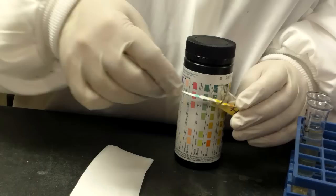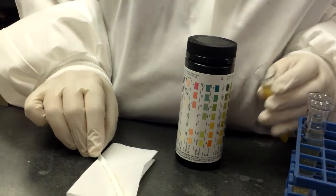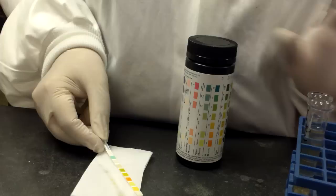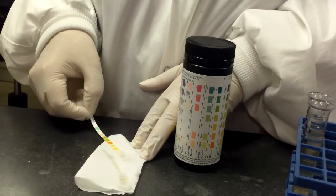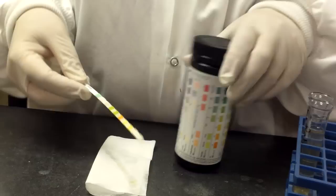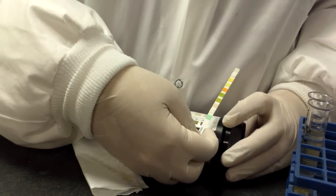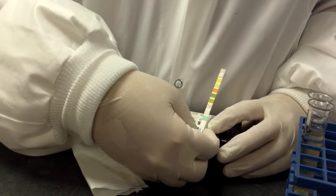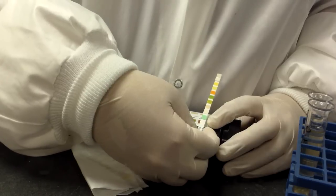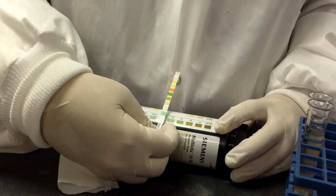So you dip it. I'm going to tap it to make sure I get any excess off. I'm going to wipe the back of it to try and keep the container as clean as possible. At the end of 30 seconds, what I'll do is I will simply compare the color to what it is here on the chart.